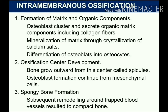Intramembranous ossification involves formation of the matrix and organic components. Osteoblasts cluster and secrete organic components including collagen fibers. This is followed by mineralization of the matrix through crystallization of calcium salts, and differentiation of osteoblasts into osteocytes. An ossification center develops, and bone grows outward from this center in structures called spicules. Osteoblasts continue forming from mesenchymal cells, resulting in spongy bone formation.